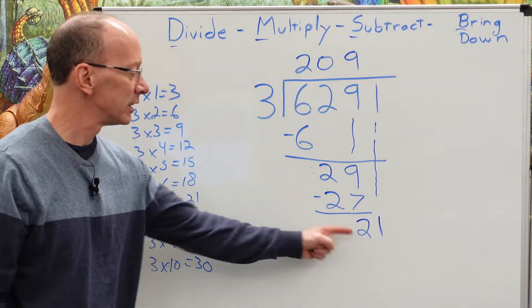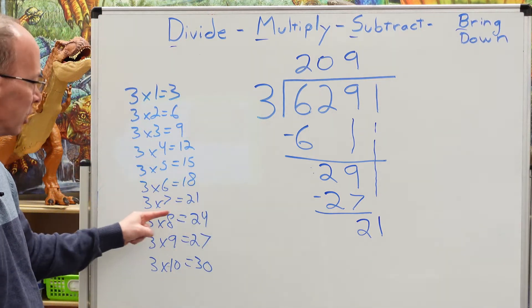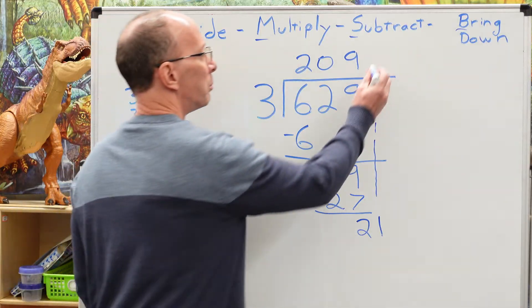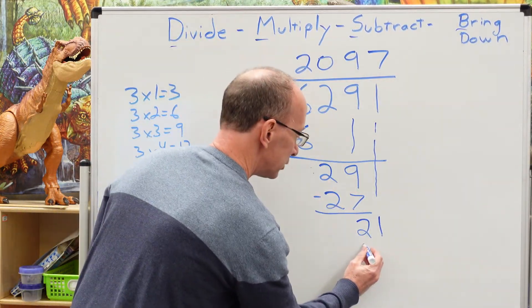Now, how many times can I put three into 21? I'm dividing again right here. Bingo. Three times seven. Put the seven right here. Seven sent from heaven. Seven times three, 21.